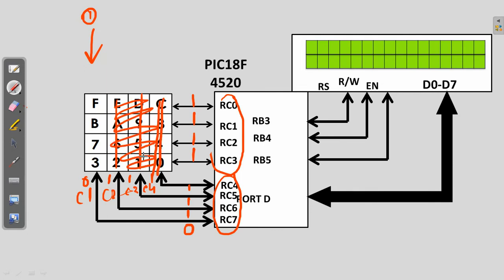When all 4 row pins are 1 and C1 is 0, if any of the keys in column 1 are pressed, that respective row pin will become 0. If F is pressed, this 0 is sent to row 1. If B is pressed, row 2 becomes 0. If 7 is pressed, row 3 becomes 0. If 3 is pressed, row 4 becomes 0. I just need to compare these row values — if row 1 becomes 0, key F is pressed; row 2 = 0 means B; row 3 = 0 means 7; row 4 = 0 means 3. Then I send the corresponding signal to the LCD.